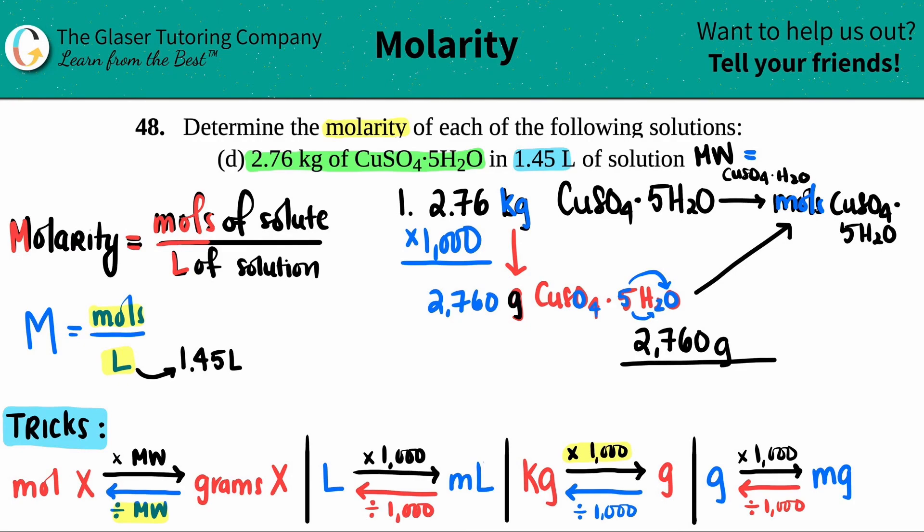So copper, I have one of those. So 63.55. I have a sulfur. I have only one of those. And then, like we just said, there's nine oxygens. So nine times 16. And then we have a total of 10 hydrogens. So I do it by that weight. And I get roughly 249.69, and that's gram per mole.